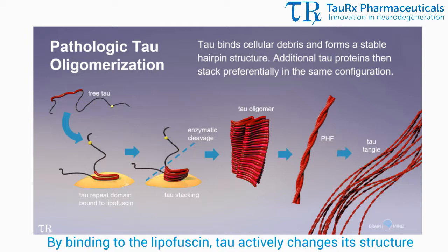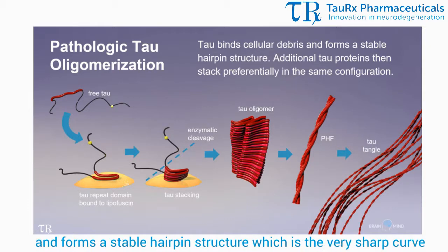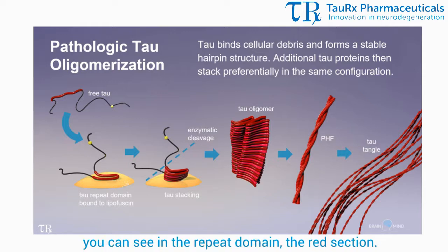By binding to the lipofuscin, tau actively changes its structure and forms a stable hairpin structure, which is the very sharp curve you can see in the repeat domain — the red section.